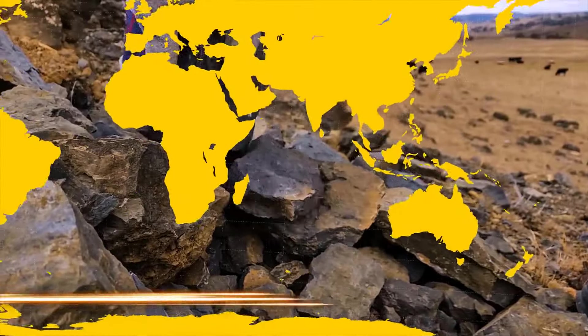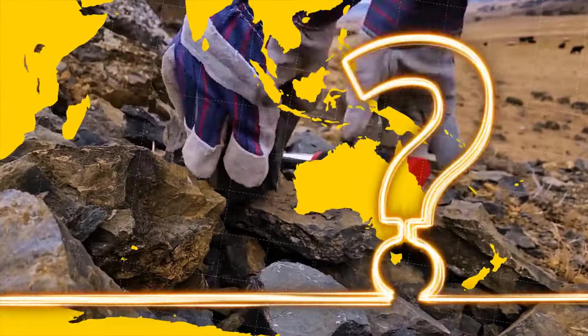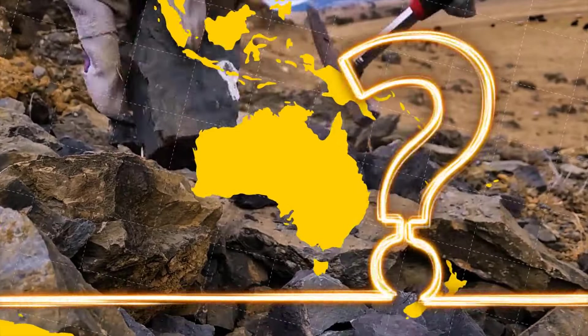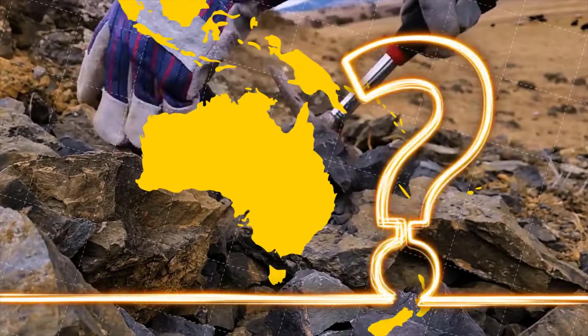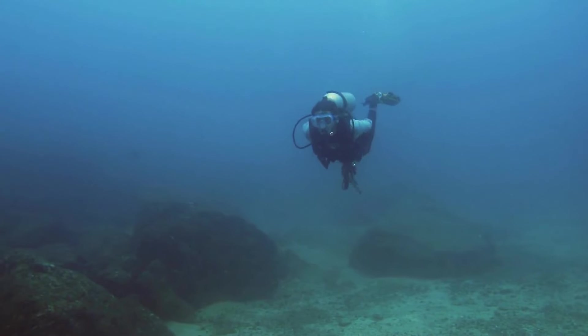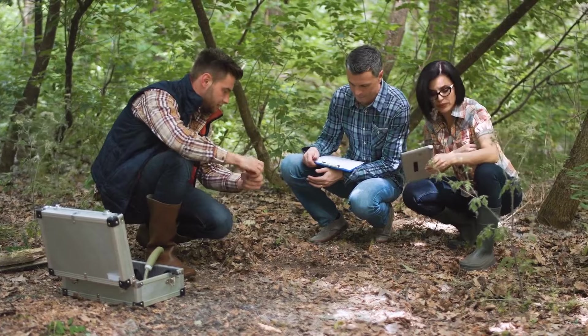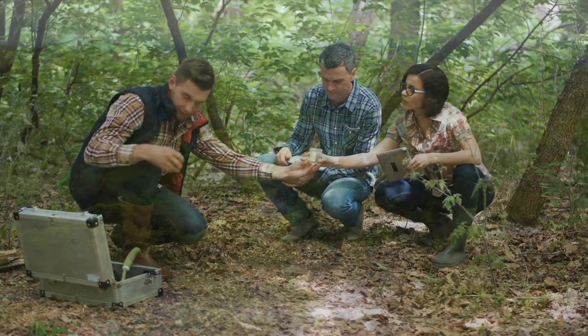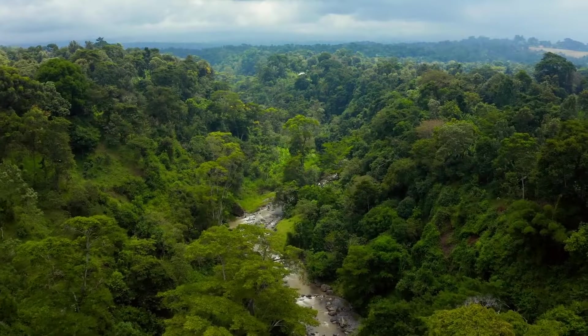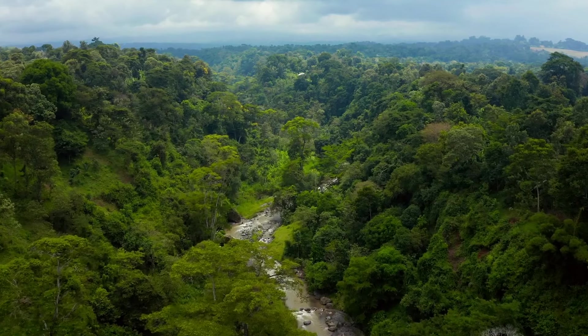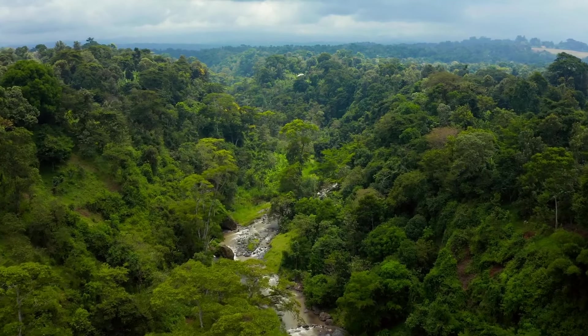For a long time, geologists had been wondering whether a massive chunk of contemporary Australia vanished into thin air. Some believed it was simply hiding somewhere on the ocean floor. But thanks to some Dutch specialists and seven years of investigating, we now know there are bits and pieces of this lost land mixed underneath the lush jungles of Southeast Asia.